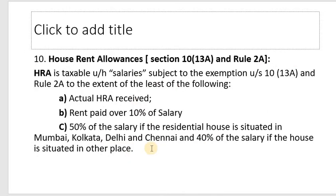Now for HRA — House Rent Allowance — under Section 10(13A) and Rule 2A. The exempt amount is the minimum of the following three: actual HRA received, rent paid over and above 10% of salary, and 50% of salary if the house is situated in Mumbai, Kolkata, Delhi, or Chennai — otherwise 40% of salary for other cities.